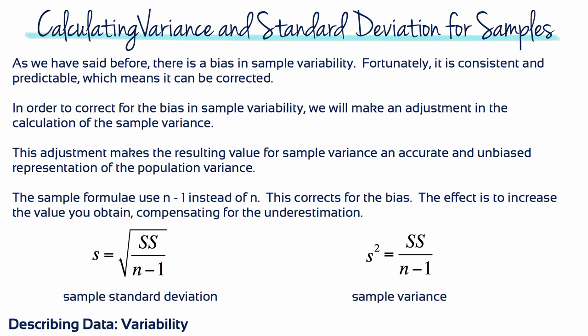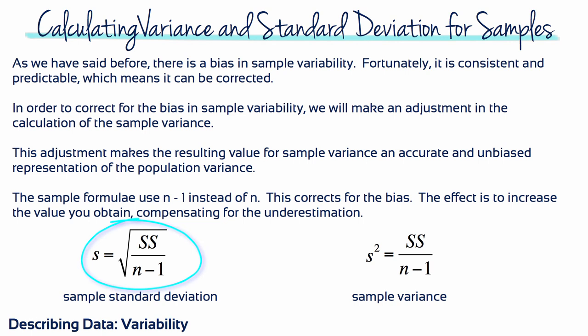Fortunately, the bias in sample variability is consistent and predictable, which means it can be corrected. For example, if the speedometer in your car consistently shows speeds that are 5 mph slower than you're actually going, it doesn't mean the speedometer is useless — you simply make an adjustment to get an accurate speed. In the same way, we make an adjustment in the calculation of sample variance. The sample formula uses n-1 instead of n, which corrects for the bias by increasing the value obtained, compensating for the underestimation. So the sample standard deviation, s, equals the square root of the sum of squares divided by n-1, whereas the sample variance, s squared, equals the sum of squares divided by n-1.